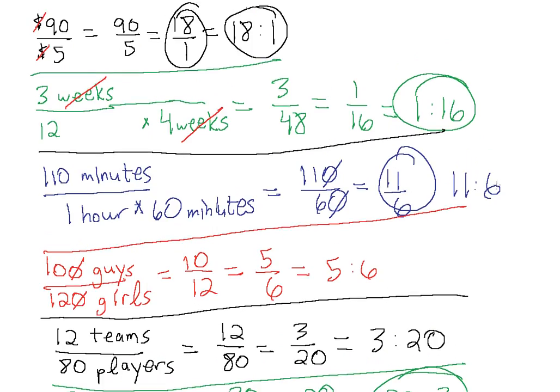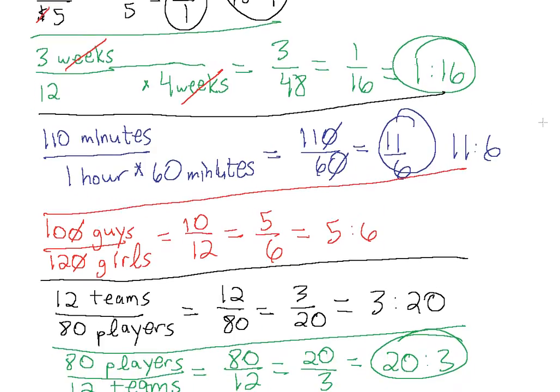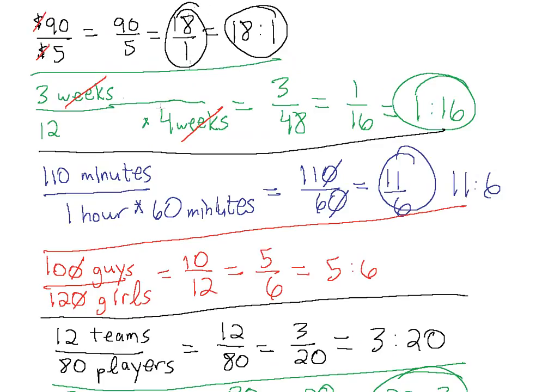So what did we learn here? We went over ratios. When we're talking about ratios, we're talking about a numerical comparison without units. We're not worried about the units. We just want to know if we have one quantity of something, how does that relate to another quantity of something, such as dollars, or weeks to months, or teams to players.